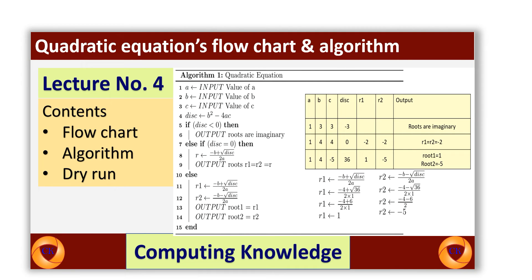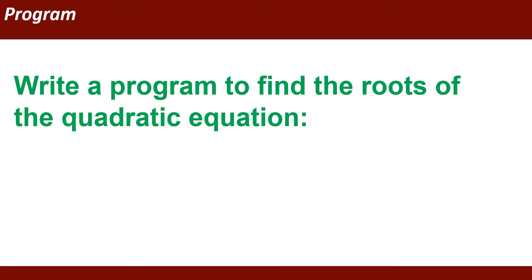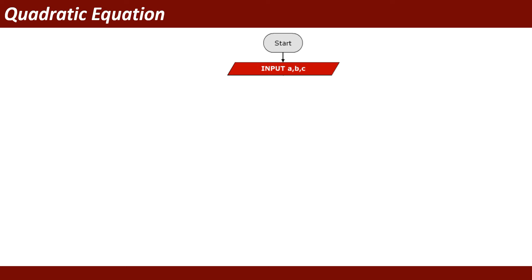In this video session I'm going to explain an algorithm, flowchart, and dry run of quadratic equations. We will write a program to find the roots of the quadratic equation. Starting with the flowchart, we begin with the oval symbol, then input A, B, C. After this, we calculate the discriminant: disk = B squared minus 4AC.